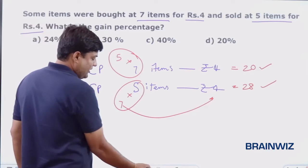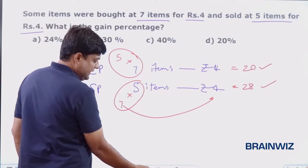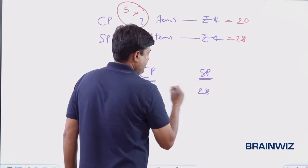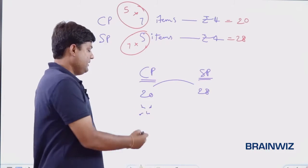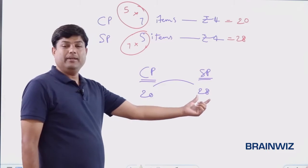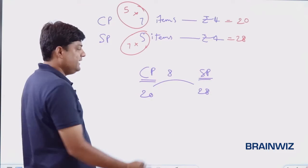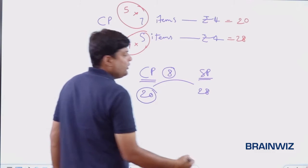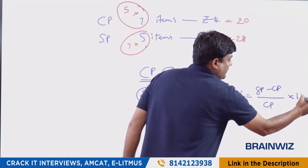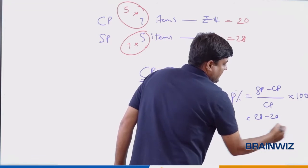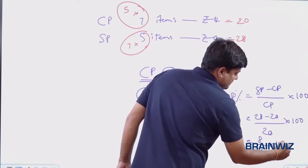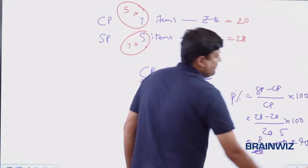Let's see how we get the profit percentage. The cost price is 20 rupees and the selling price is 28 rupees. We can see 20 rupees is the investment — cost price is 20 rupees, selling price is 28 rupees, and he has made a profit of 8 rupees. So this is 8 per 20. To calculate profit percentage: selling price minus cost price divided by cost price into 100. So 28 minus 20 divided by 20 into 100 gives 8 divided by 20 into 100, which is 40 percent profit.